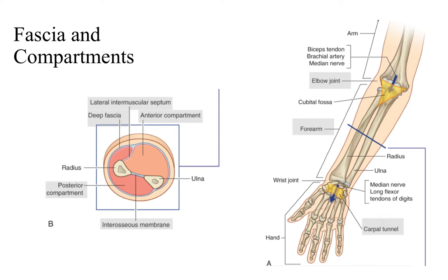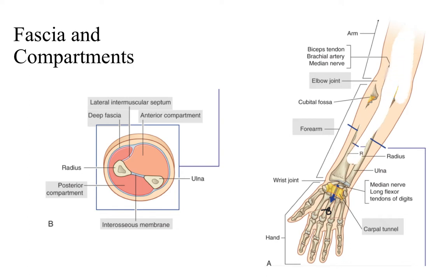So for example, most of the muscles that control the forearm are going to be located in the arm itself, and the muscles that control the hand are going to be located in the forearm. That's a general trend, and as a general rule, always look one bone up for the muscles that control the part of the limb you're examining.